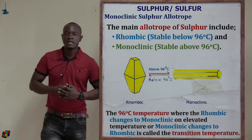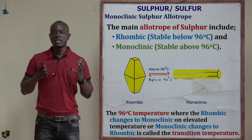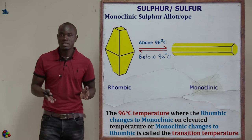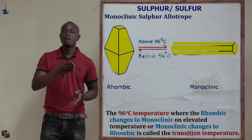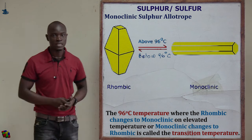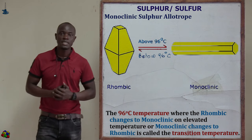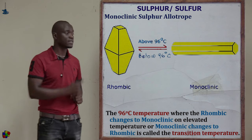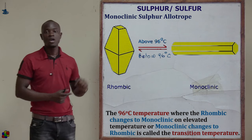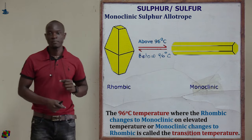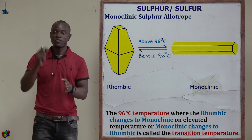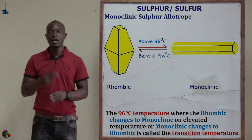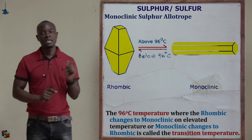Below 96 degrees Celsius, rhombic sulfur is formed. Above 96 degrees Celsius, monoclinic sulfur is formed. If we increase the temperature of rhombic sulfur above 96 degrees Celsius, we get monoclinic sulfur. If we decrease the temperature of monoclinic sulfur below 96 degrees Celsius, we get rhombic sulfur.